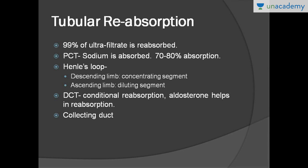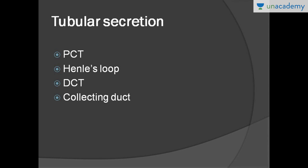Next is tubular reabsorption, which takes place in the tubules as well as the loop of Henley, DCT, and collecting duct. Tubular secretion takes place in the PCT, loop of Henley, distal convoluted tubule, and the collecting duct.